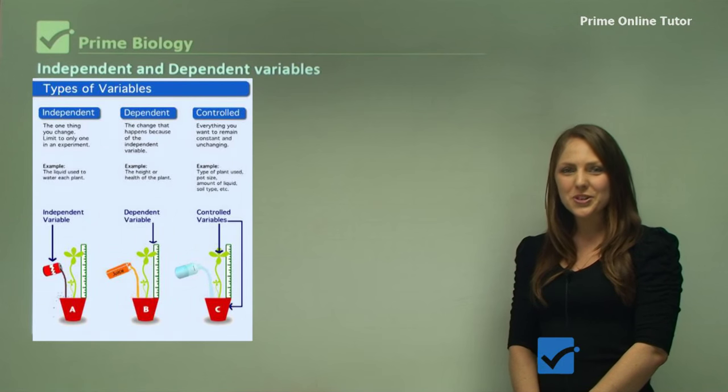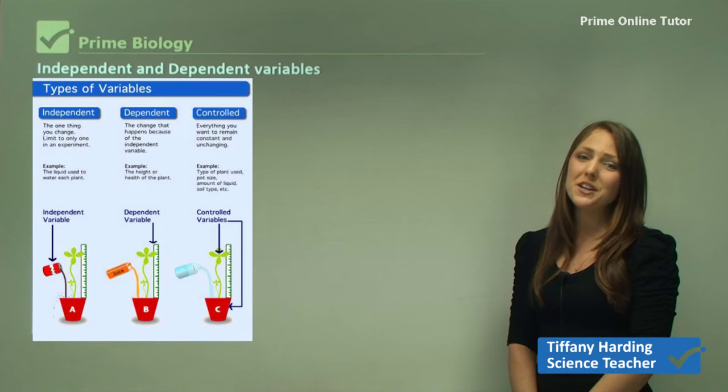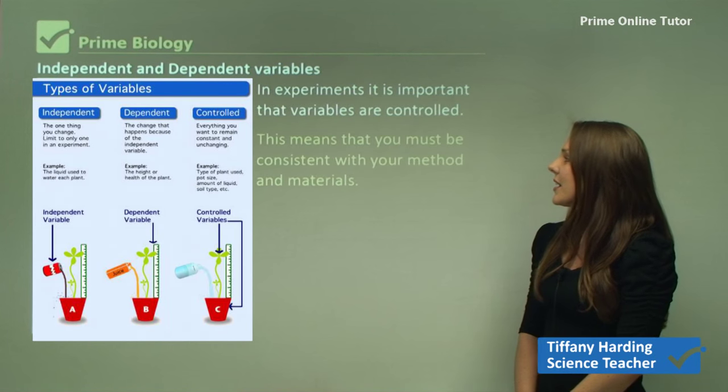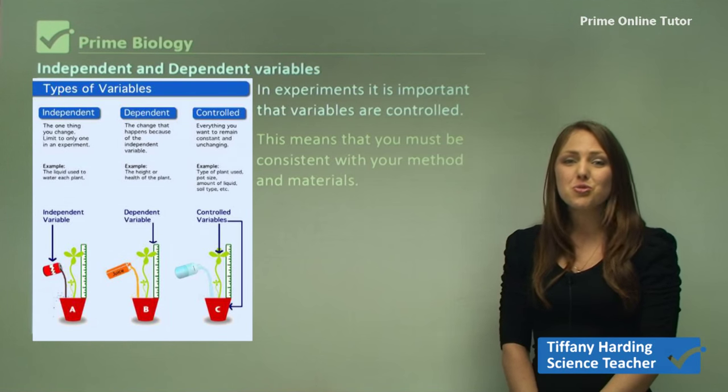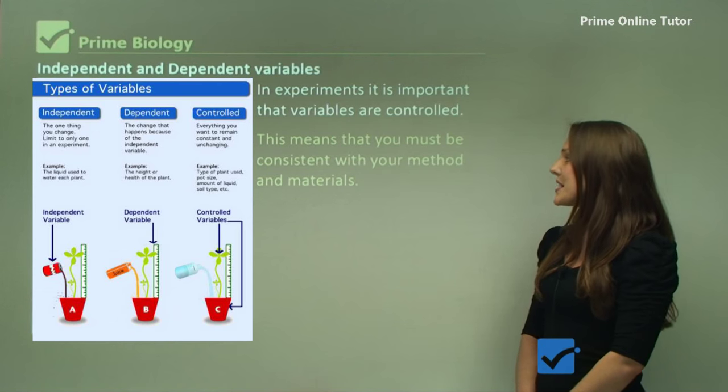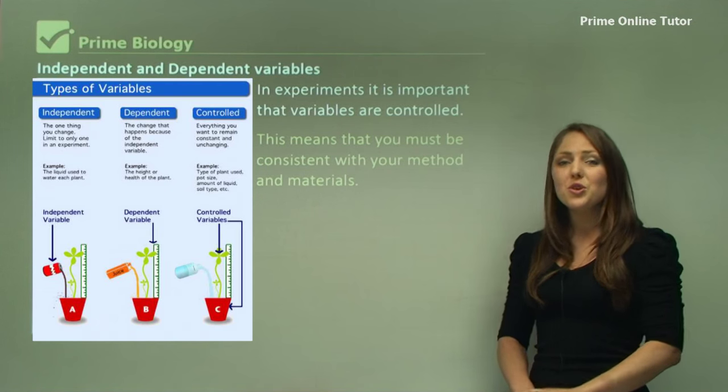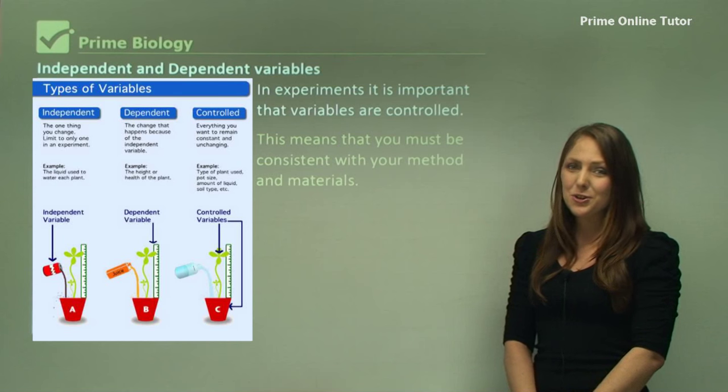In biology, it's very important to understand what independent and dependent variables are. It's important that they're controlled in experiments. This means that you must be consistent with your method and your materials that you use.